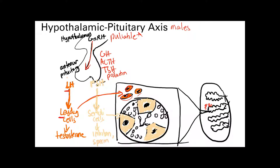The Leydig cells are going to make testosterone. FSH, on the other hand, acts on the Sertoli cells, which are located inside the seminiferous tubules. Sertoli cells nourish the spermatogonium next to them, and they also make inhibin.